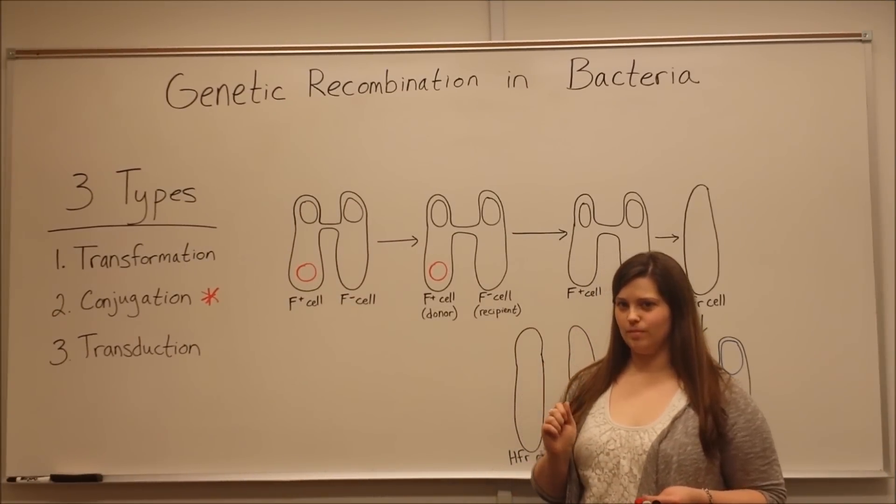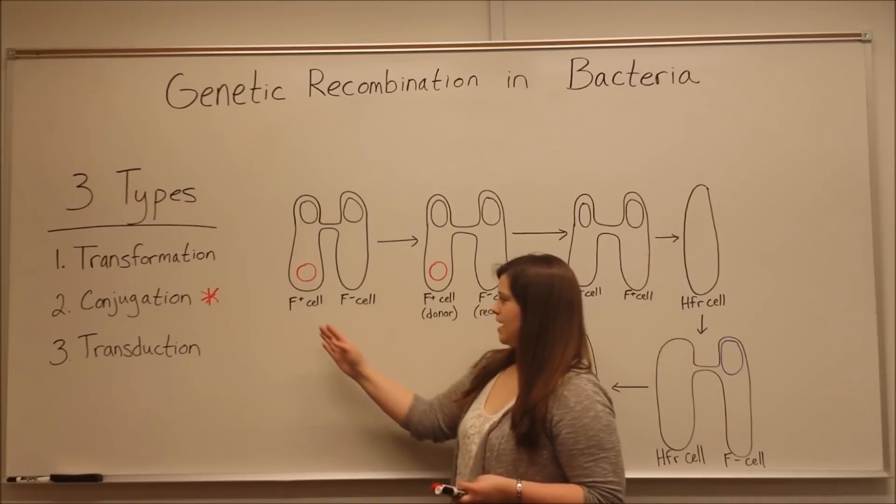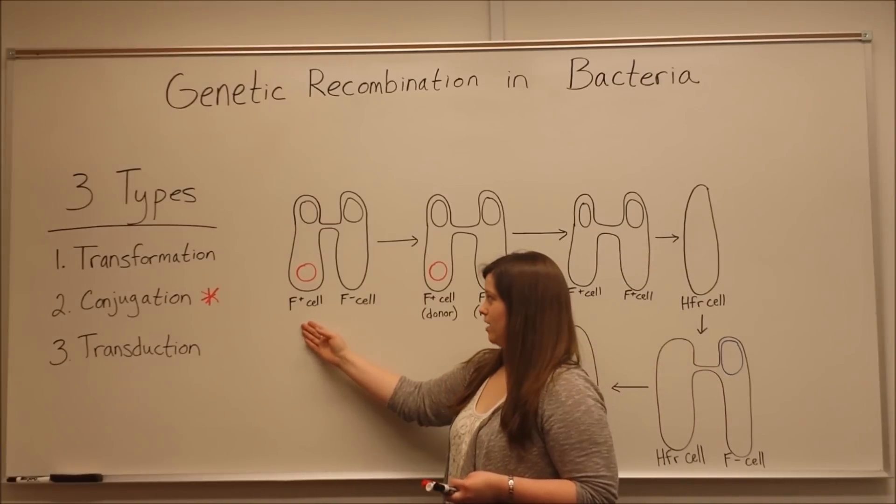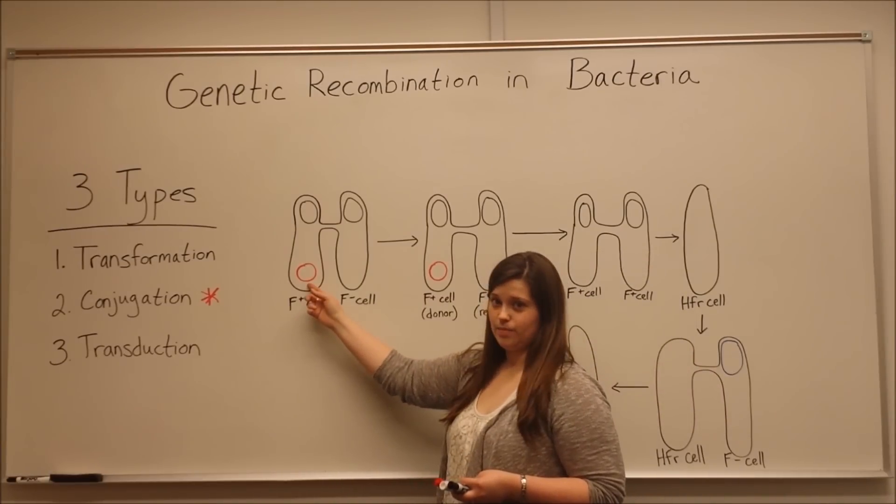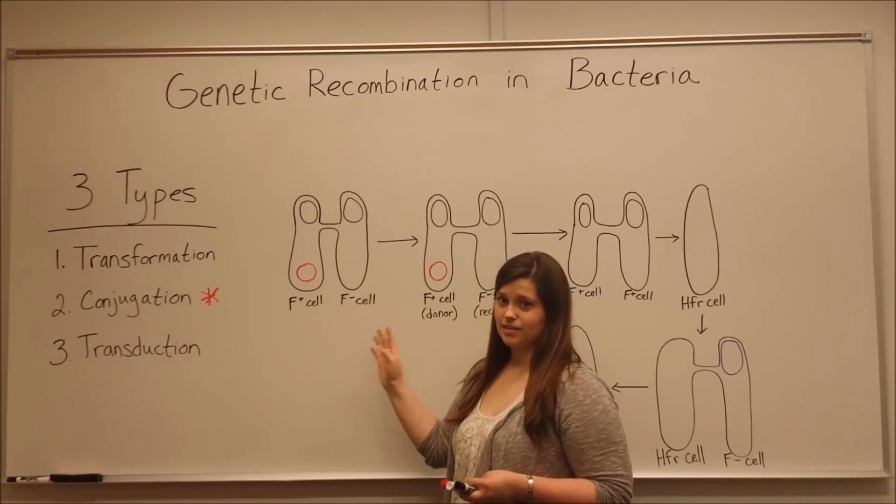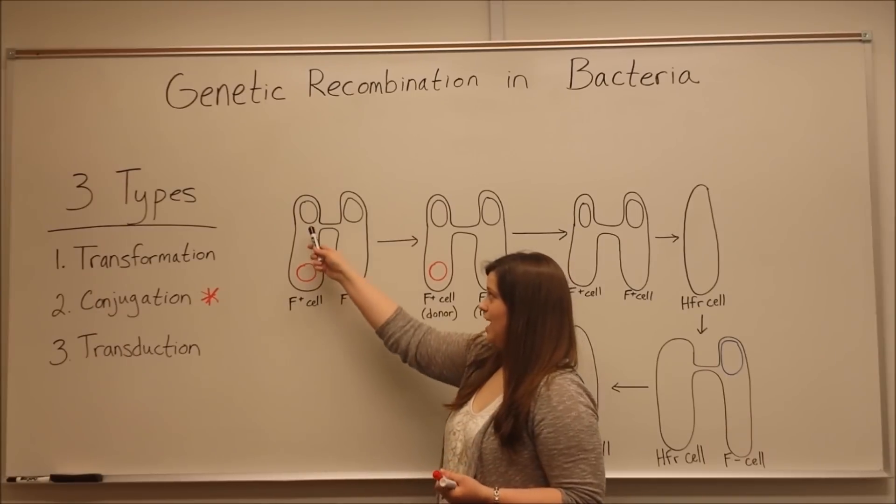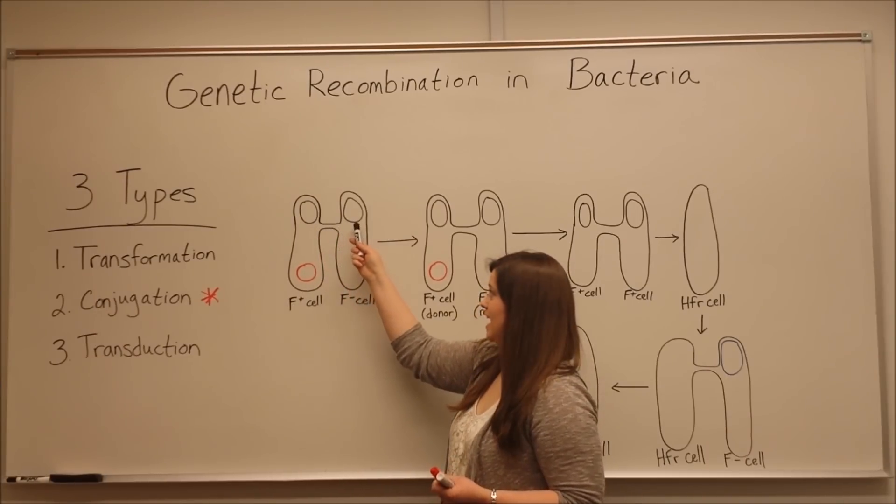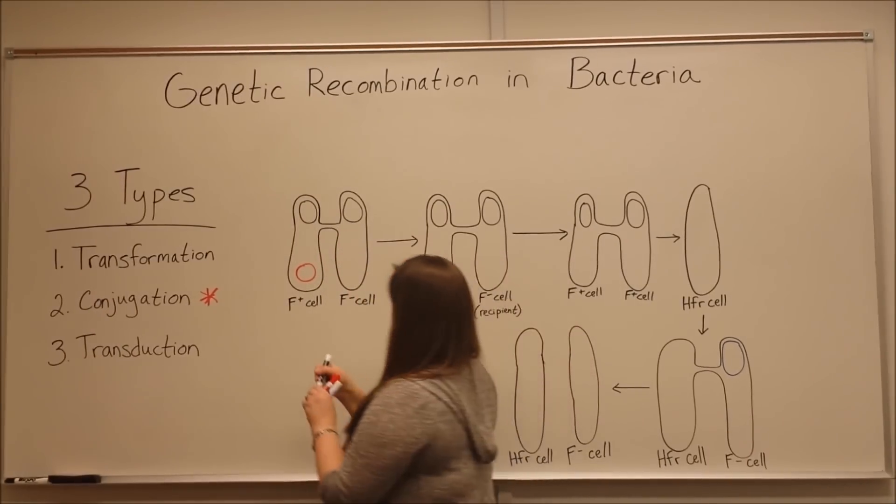Now let's look at the mechanism in more detail. We start with our F-plus cell that has the fertility plasmid, drawn in red, and an F-minus cell which lacks the fertility plasmid. Both cells have chromosomal DNA as well, shown in black.